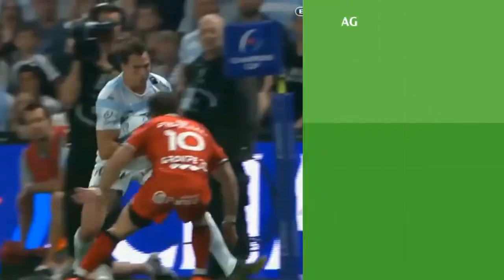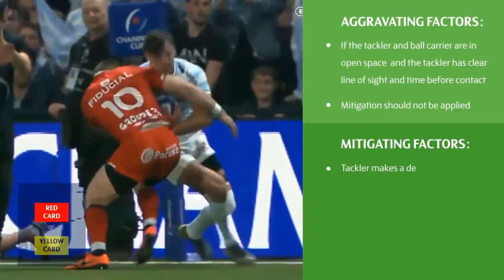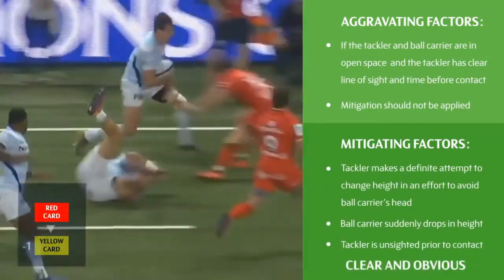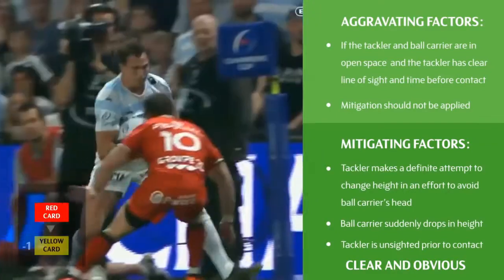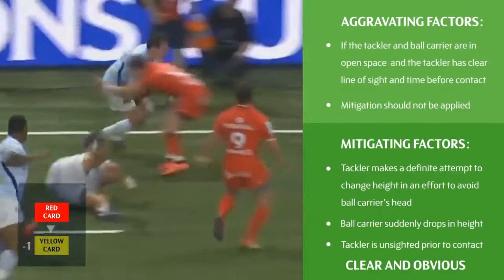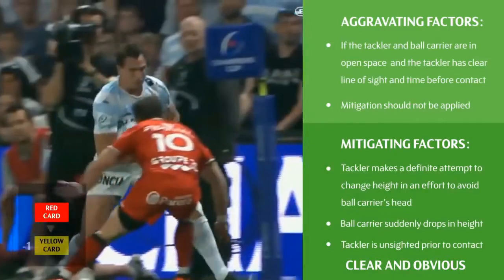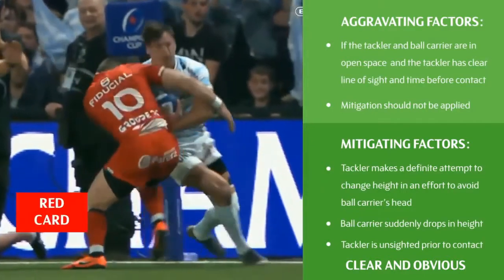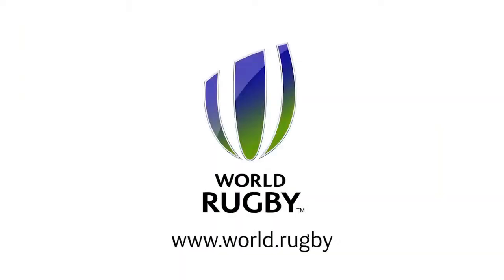The officials now assess whether any clear and obvious aggravating or mitigating factors are present. The body position of the ball carrier may be a possible mitigating factor. However, this needs to be clear and obvious and also weighed against the fact that the tackler is in open space with a clear line of sight and time to make a tackle that avoids high contact. Therefore, there is insufficient reason for mitigation and the initial decision of a red card is upheld. Through thorough education and consistent on-field management, World Rugby hopes that player and coach culture will change, having a positive impact on injury prevention.